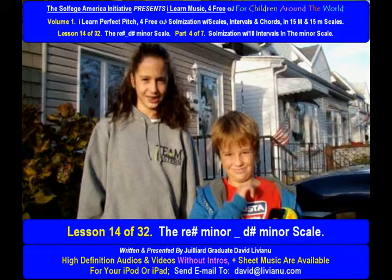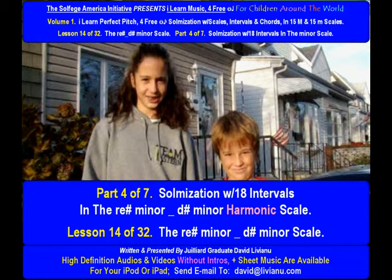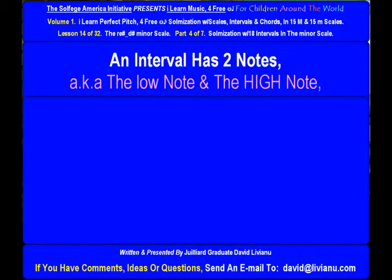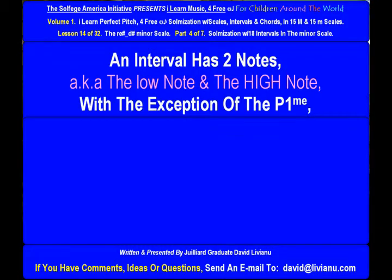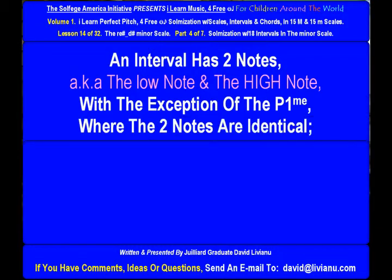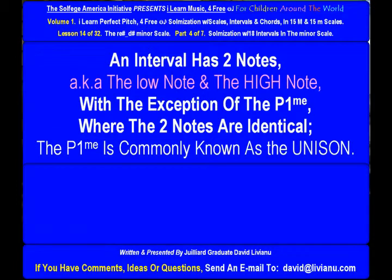Lesson 14 of 32: the D-sharp minor scale, part 4 of 7. There are 18 intervals in the D-sharp minor harmonic scale. An interval has two notes, also known as the low note and the high note, with the exception of the perfect prime, where the two notes are identical.